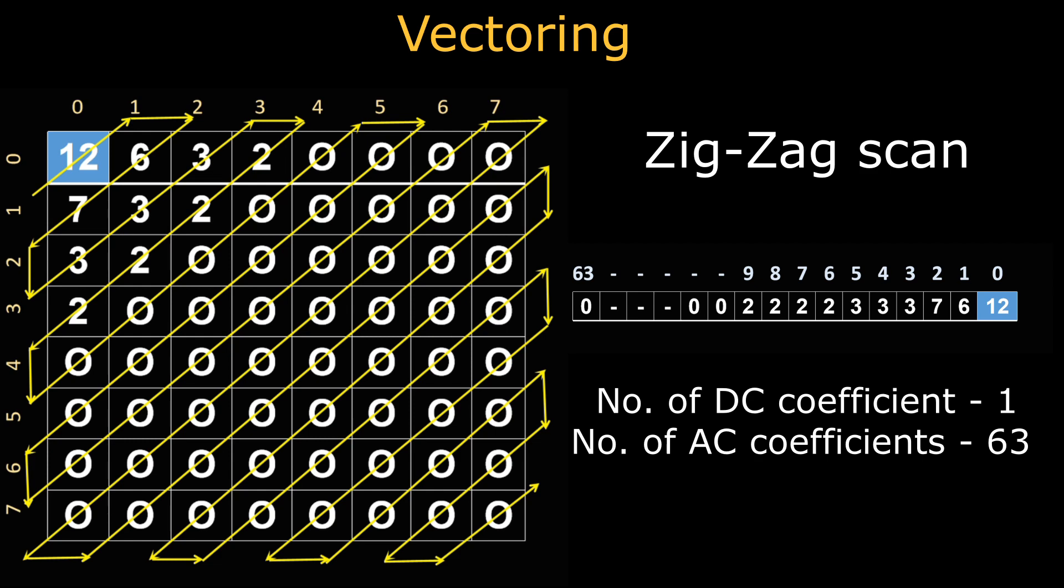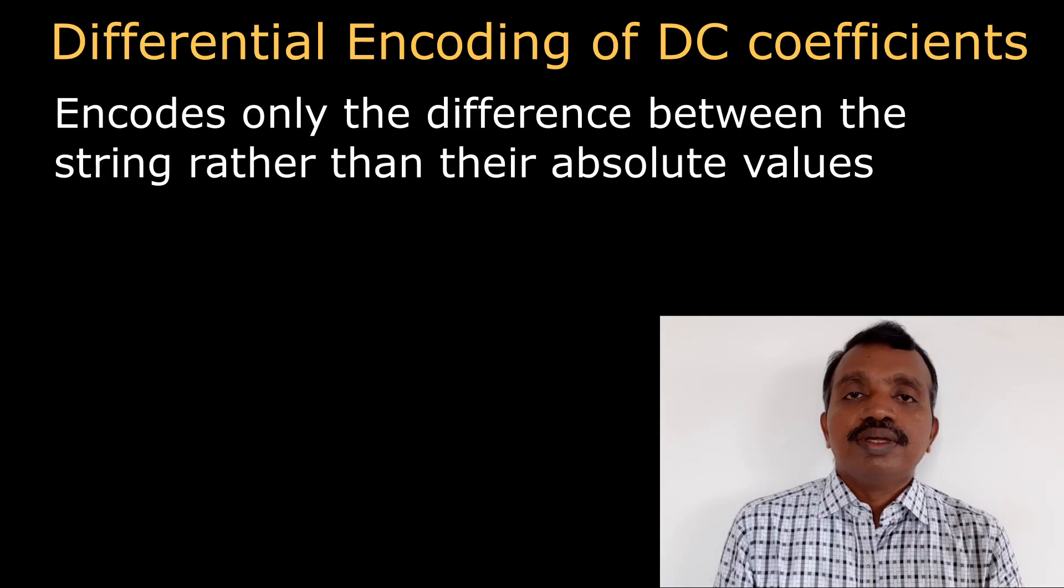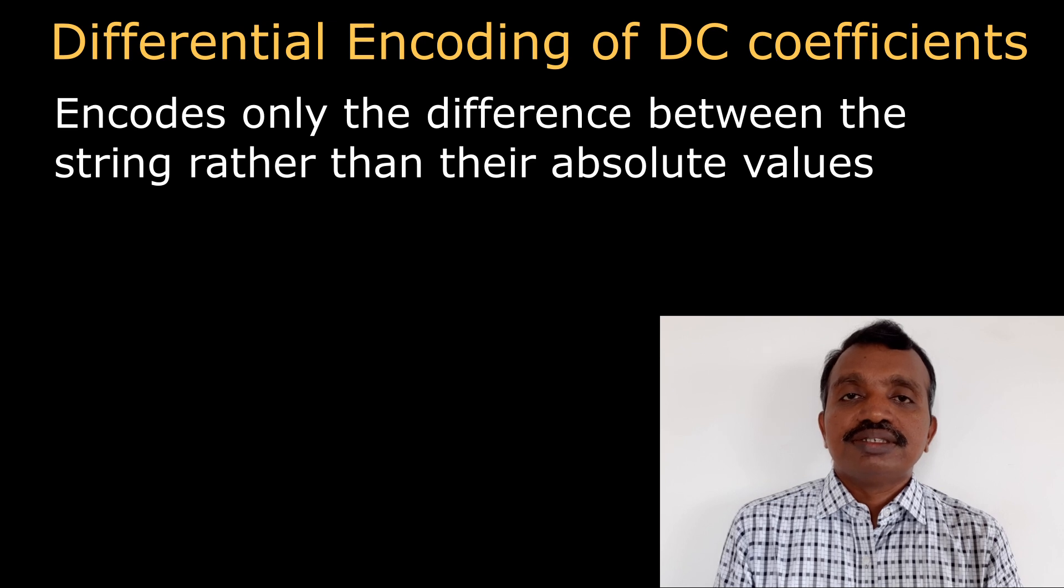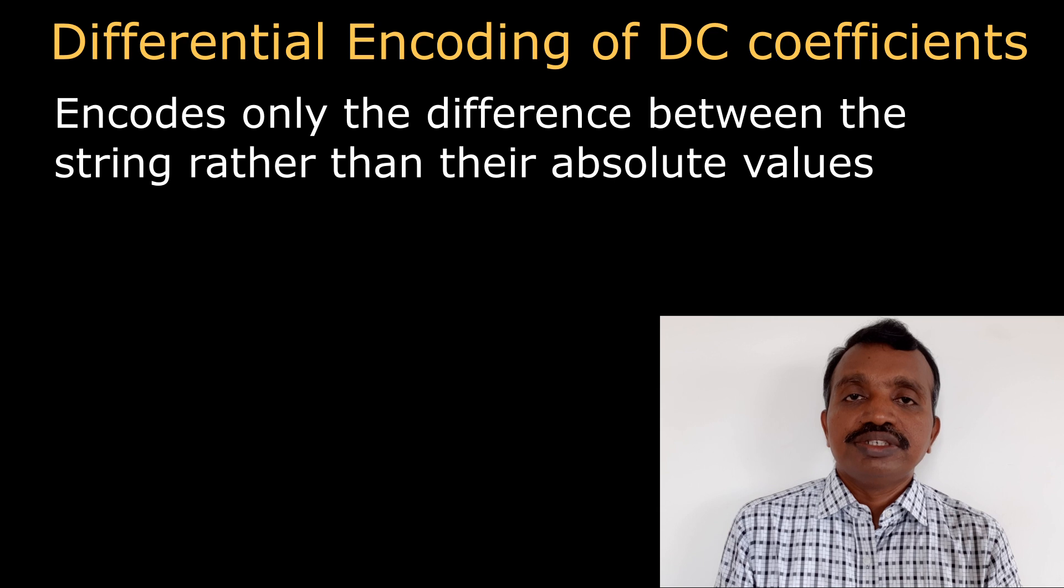The DC coefficient is the largest in magnitude. As a result, the DC coefficient is differentially encoded. In our example we can see the DC coefficient which is higher than all other coefficients present in the vector.